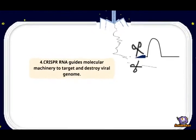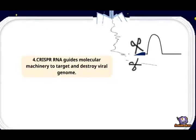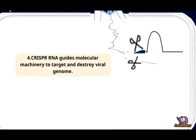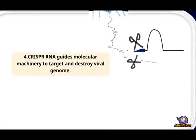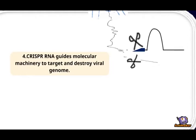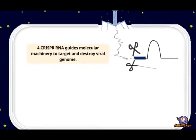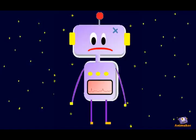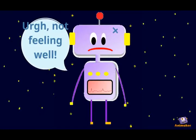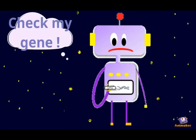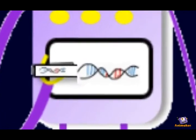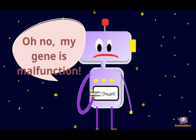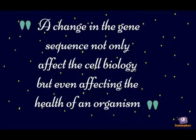Because CRISPR RNA sequences are copied from the viral DNA sequences acquired during adaptation, they are exact matches to the viral genome and thus serve as excellent guides. A change in the gene sequence not only affects the cell biology, but also affects the health of an organism.